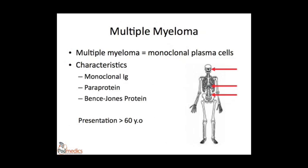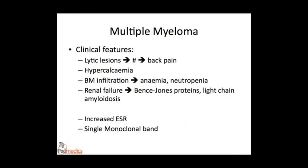Multiple myeloma typically presents in people older than 60 years and has a number of characteristic clinical features. Bone pain is a very important feature, caused by excessive stimulation of osteoclasts by plasma cells, resulting in lytic lesions on X-ray, generalised osteoporosis, and fractures, typically in the vertebrae leading to back pain. Because of this excess bone breakdown, there is usually hypercalcaemia. There may also be bone marrow infiltration, with anaemia being the most common feature — a normocytic, normochromic anaemia.